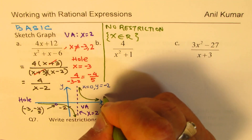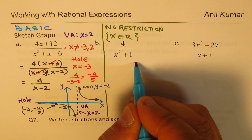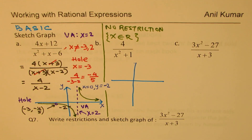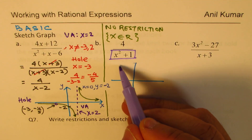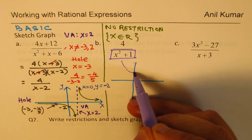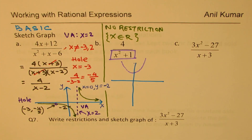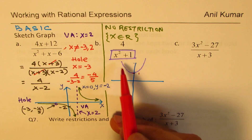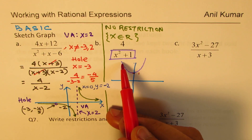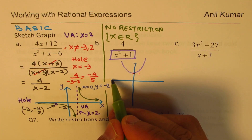This is a very important example. What we can do is sketch it using a different technique: first sketch x² + 1, which graphs as a parabola opening upward. Then we consider 4 divided by that. When you divide by a large number, 1 over a large number is very small, so the resulting graph will be a bell-shaped curve.